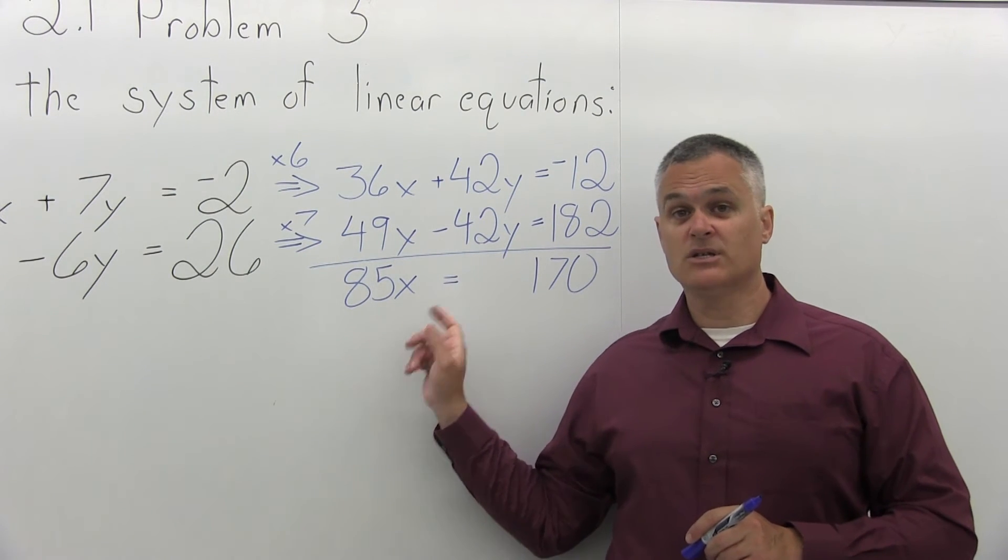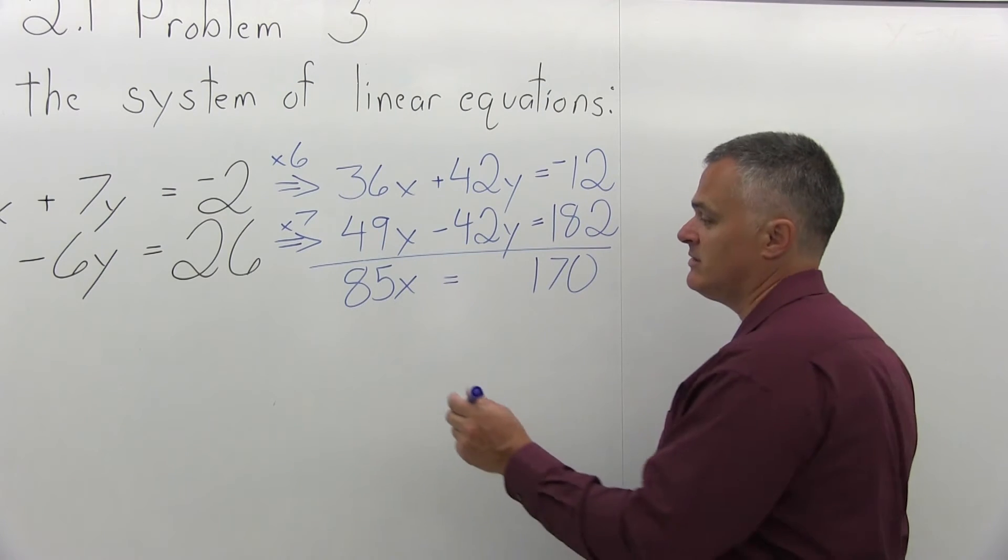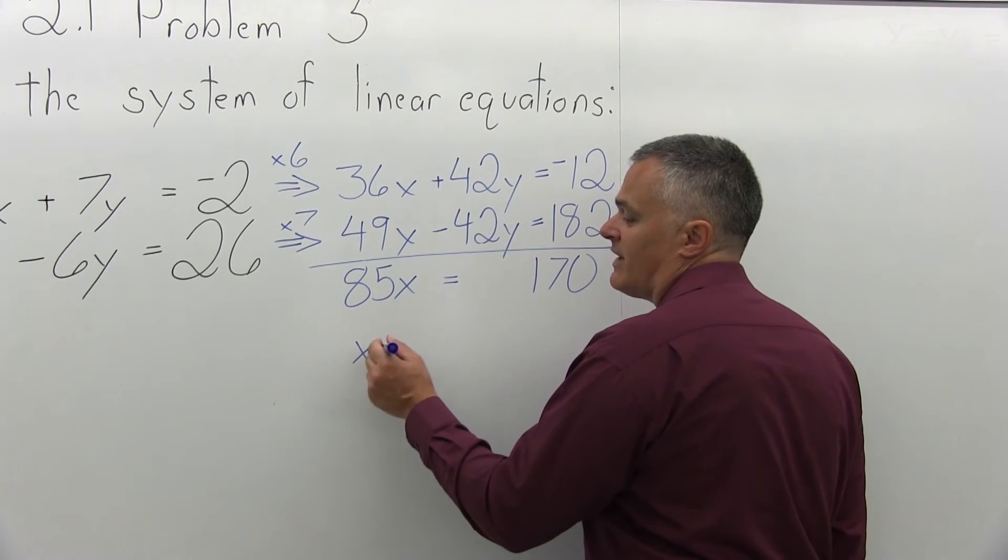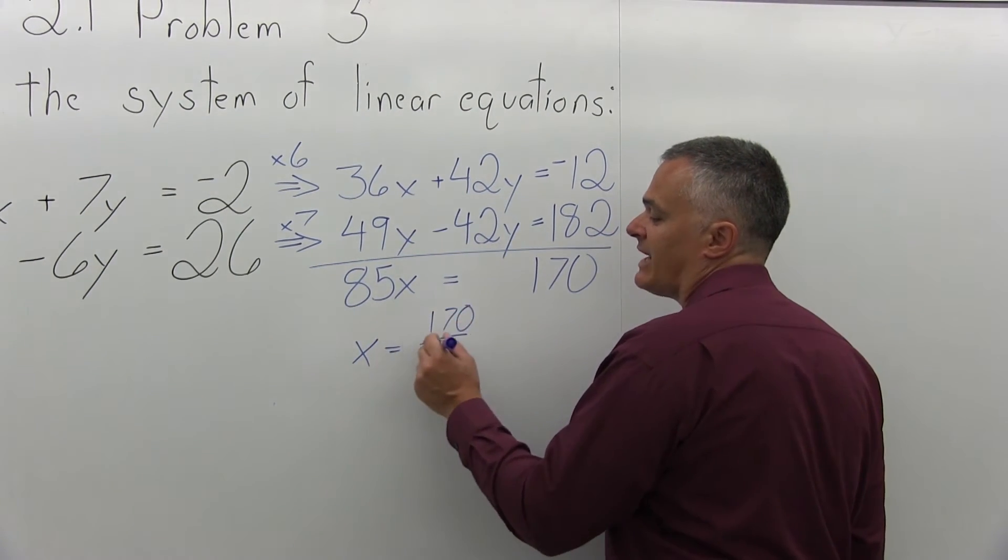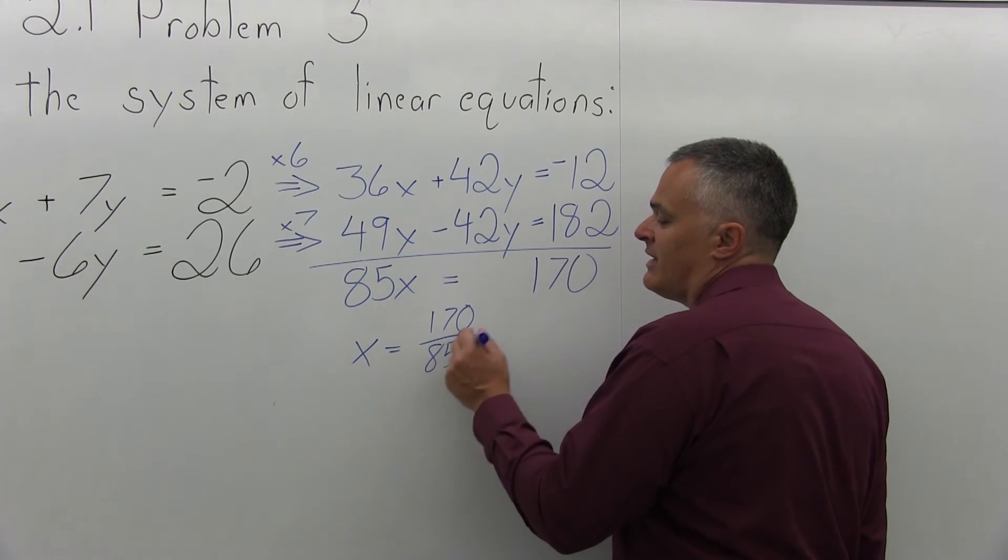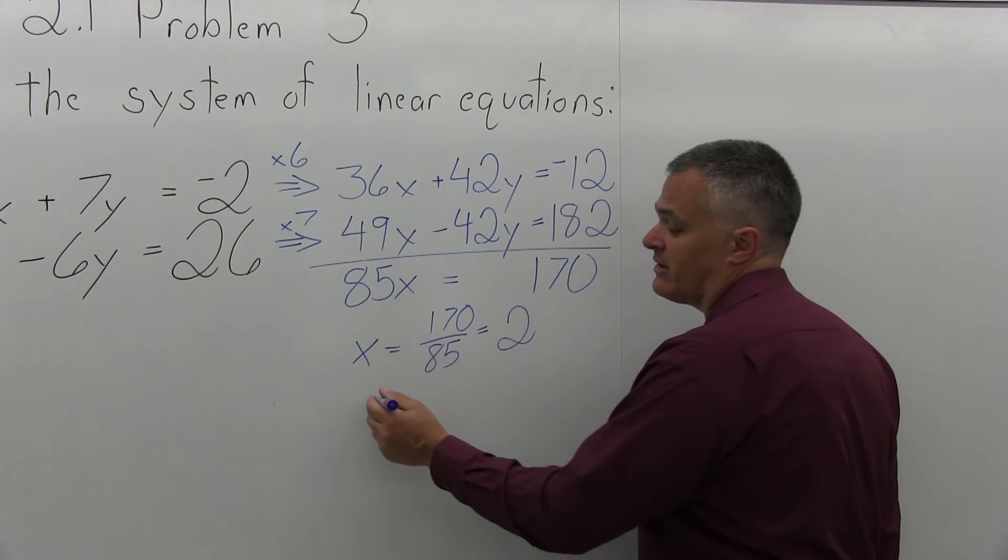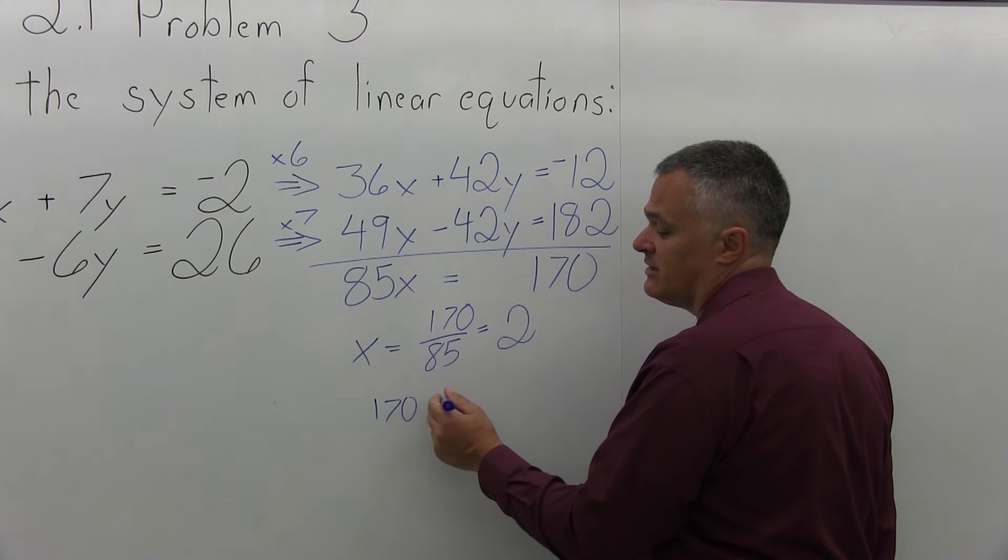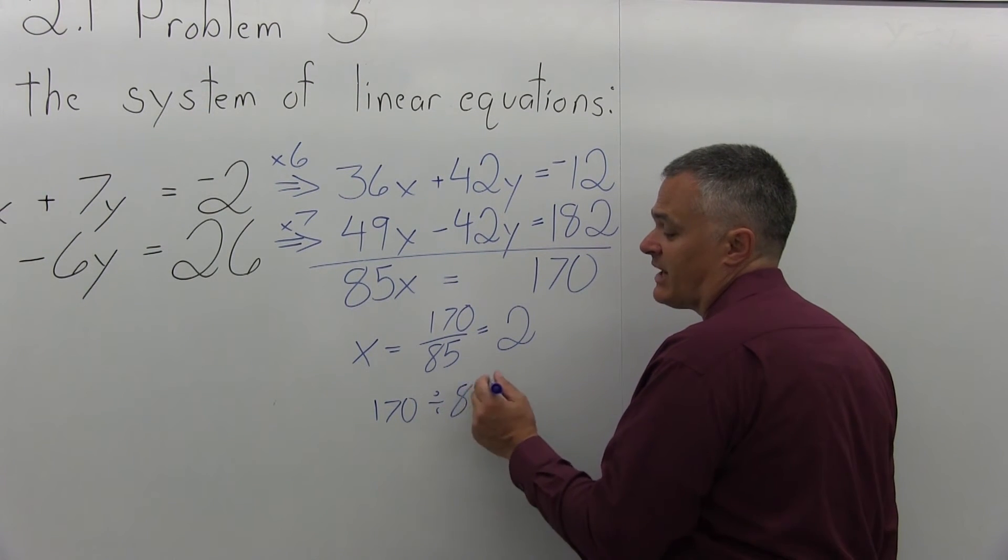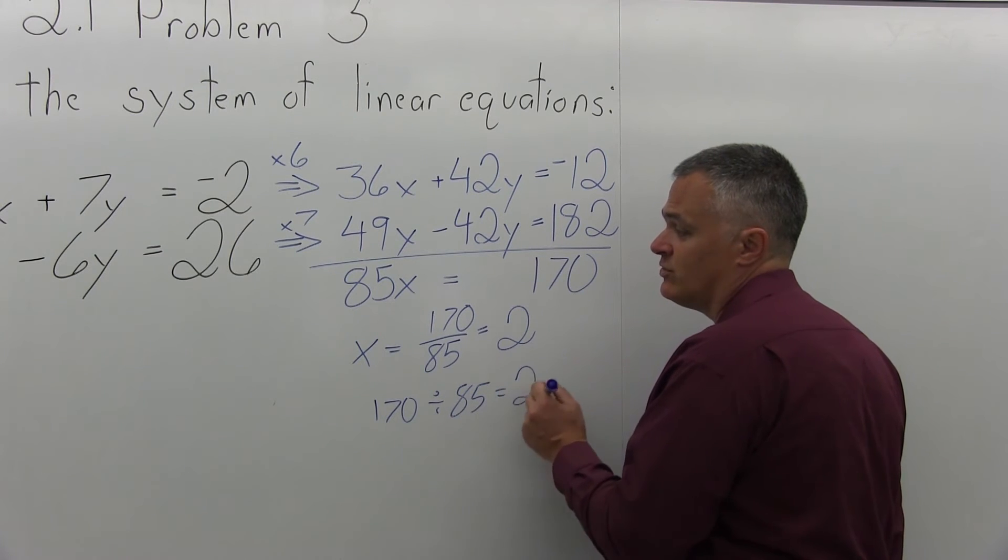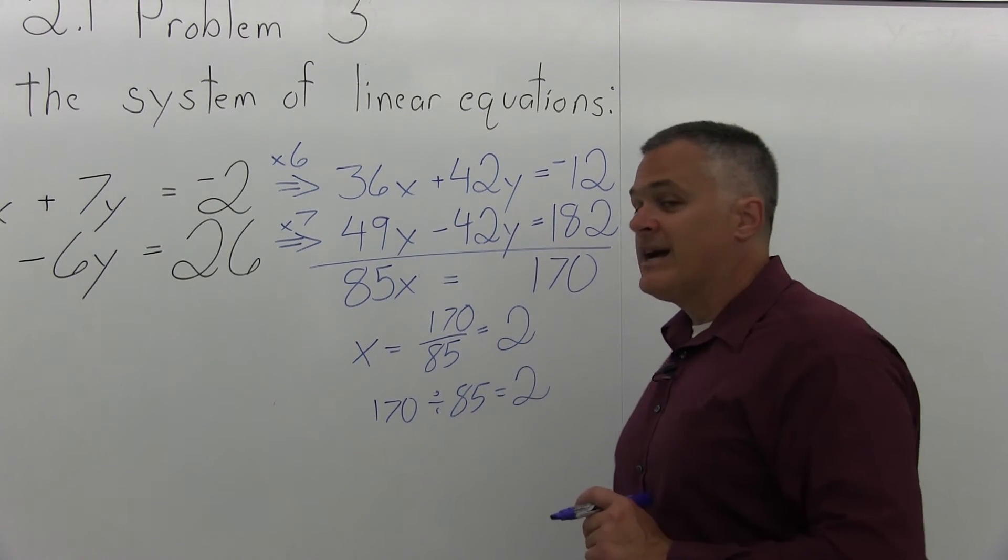Step 3 is solve for the remaining variable. I can divide out that 85. X equals 170 divided by 85. And that will be 2. You can do that on your calculator if you don't see the answer easily. 170 divided by 85 equals 2. So, x is 2.